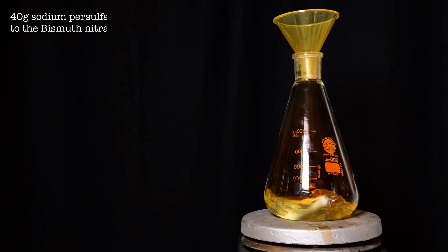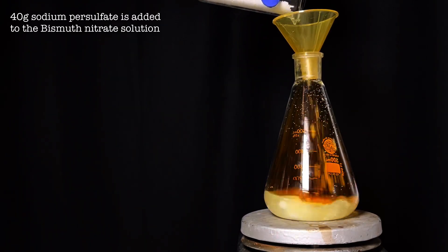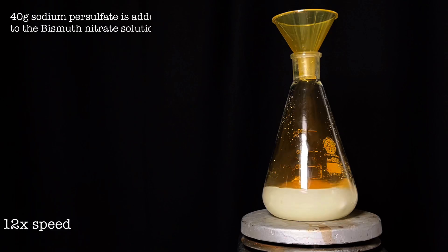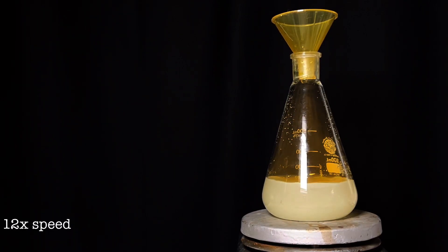Now the previous Erlenmeyer was taken and 40 grams of sodium per sulfate was added to it. If it feels like it is not dissolving, a little extra water could be added carefully.